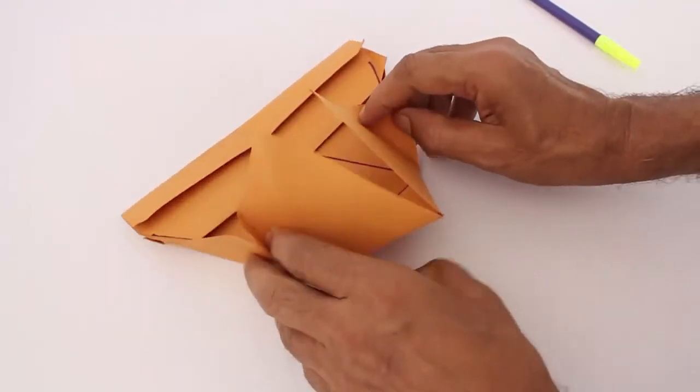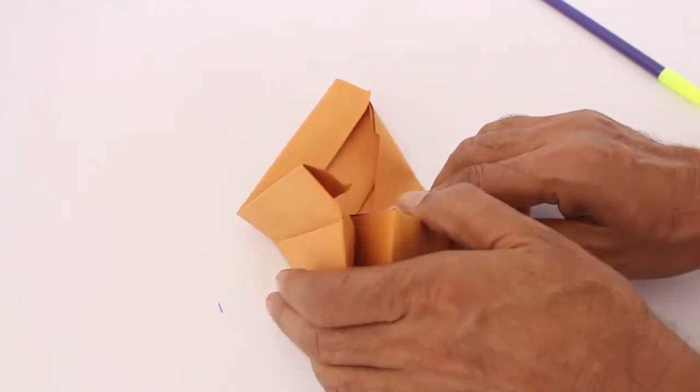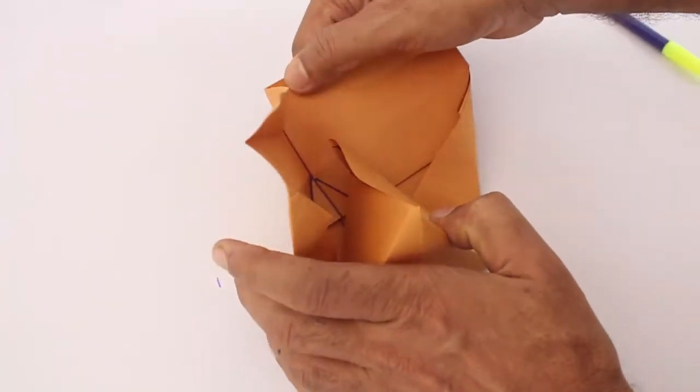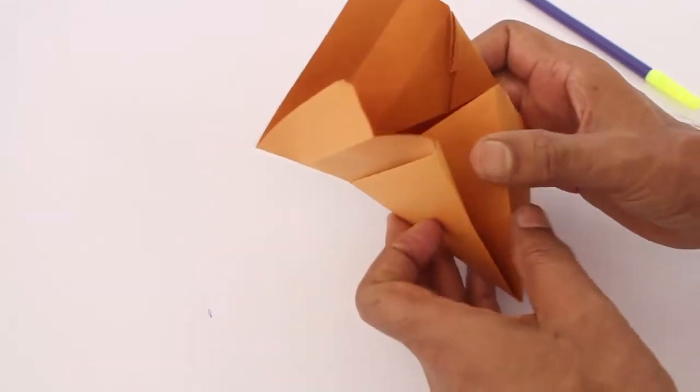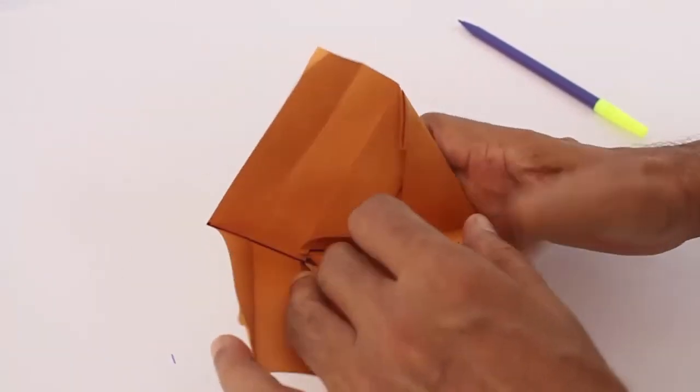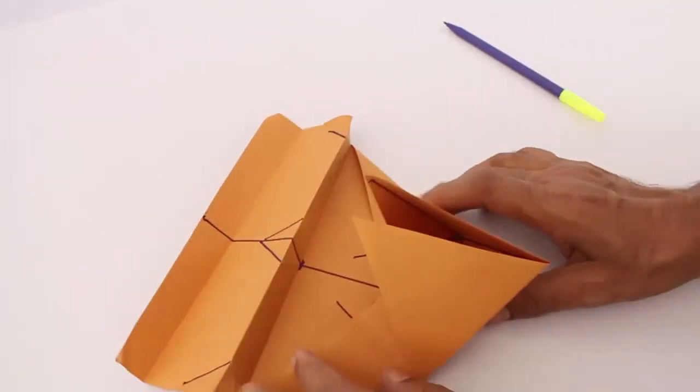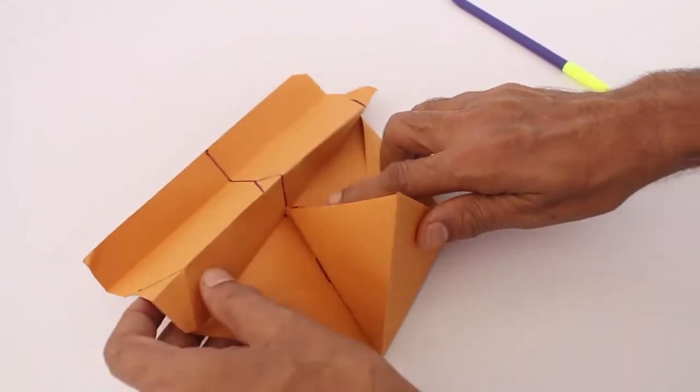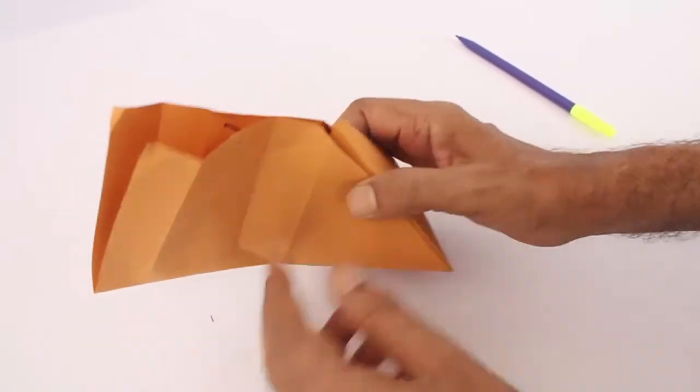Now we are ready to fold the tetrahedron or the samosa shape. So essentially, first you try and make a tetrahedron which is a four sided shape made of four equilateral triangles.